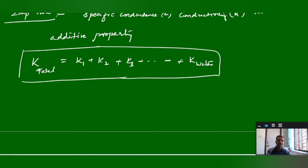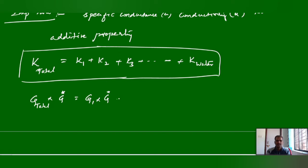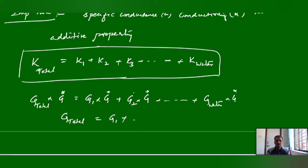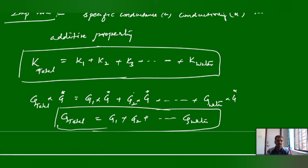If water also shows some conductivity, it can be included: the overall conductivity of the solution equals the sum of conductivities of all electrolytes plus the conductivity of water. Since K equals G times cell constant, we can derive: G total equals G1 plus G2 plus conductance of water, after canceling the cell constant from both sides.